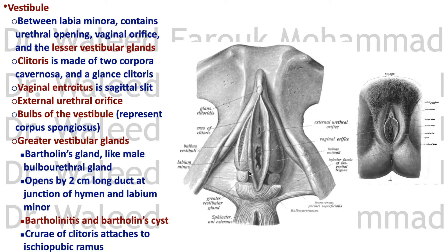Sometimes dry or thick secretions occlude the duct, leading to swelling and inflammation of the gland called Bartholinitis or Bartholin cysts — a common female infection. The crura of the clitoris attach to the ischiopubic ramus; they are the same as the crura of the penis but slimmer, and they attach to the clitoris.